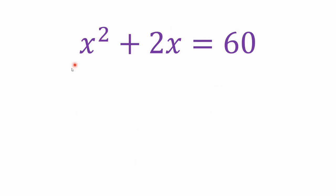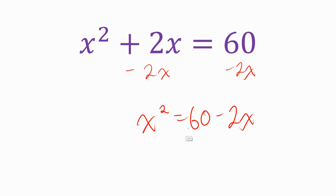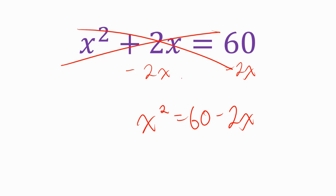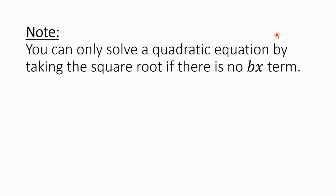What about x squared plus 2x equals 60? We can't just take the square root of both sides because there's a 2x term here. We could try subtracting 2x from both sides, but that gives us x squared equals 60 minus 2x, and we can't take the square root of that. We can't combine x squared and 2x into anything — you can't add those together. So there are equations we cannot solve by taking the square root. You can only solve a quadratic equation by taking the square root if there is no bx term — that's the middle term in standard form.